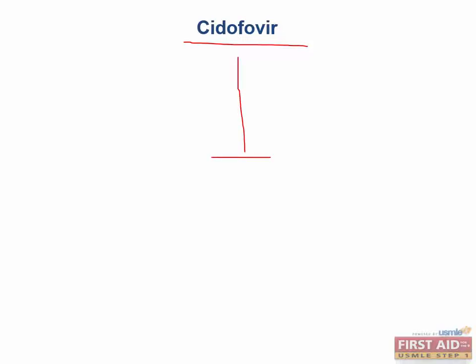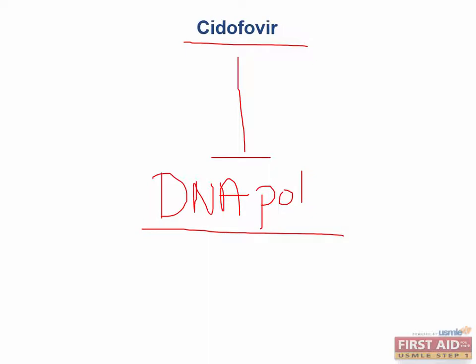Cidofovir is very similar to Foscarnet, except that it preferentially inhibits DNA polymerases and not RNA polymerases. Remember, Foscarnet preferentially inhibits both DNA and RNA polymerases, while Cidofovir only inhibits DNA polymerases. Like Foscarnet, Cidofovir does not require phosphorylation by viral kinases and is useful in treating CMV retinitis and herpes simplex virus resistant to acyclovir.